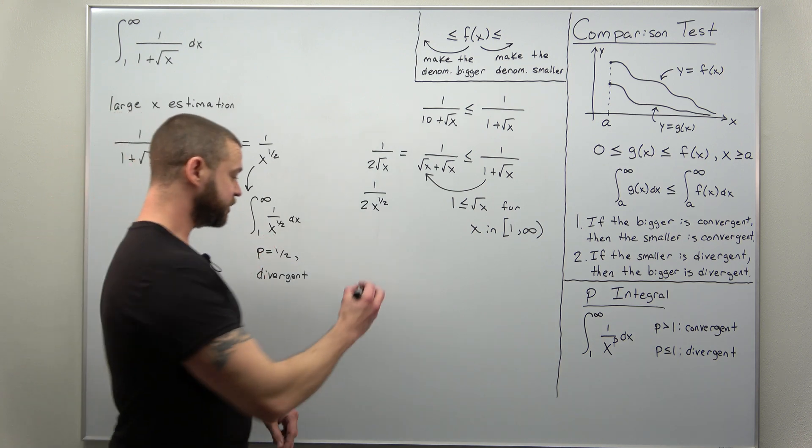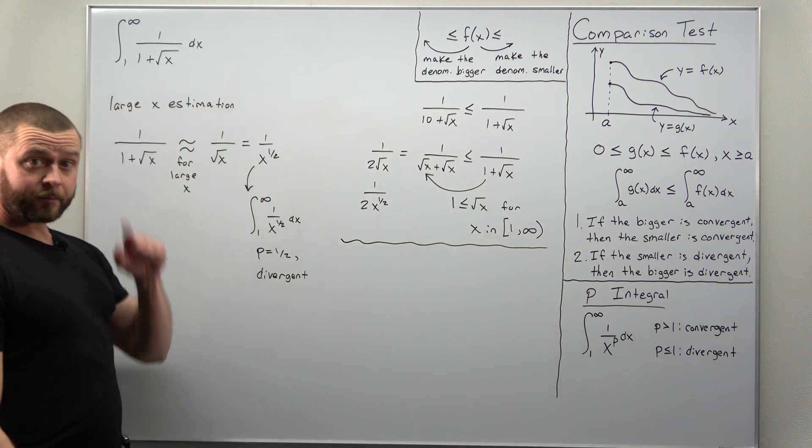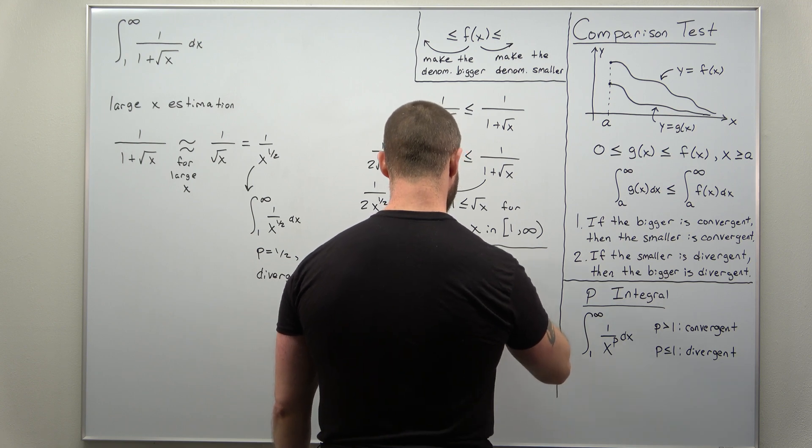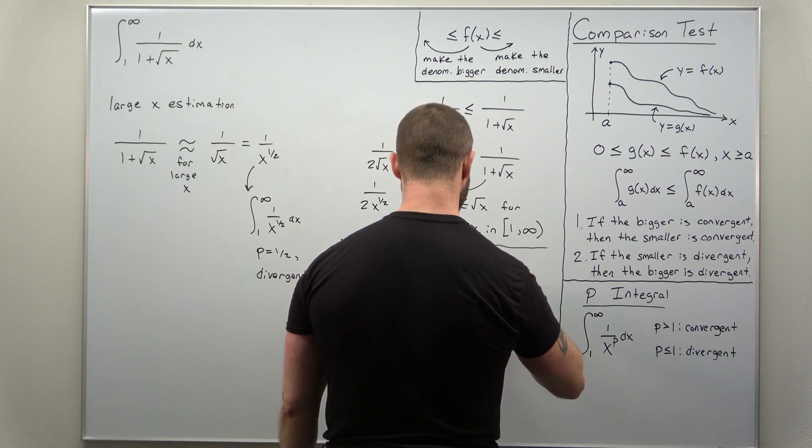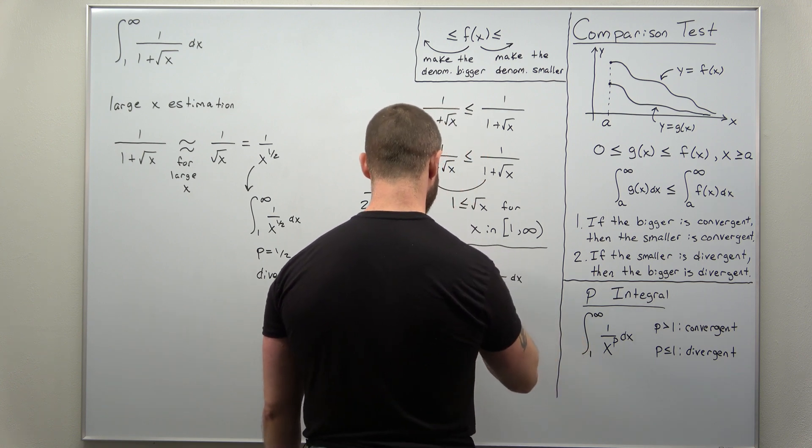So we can make this precise now. We have our original improper integral, so the improper integral from one to infinity of one divided by one plus square root of x.